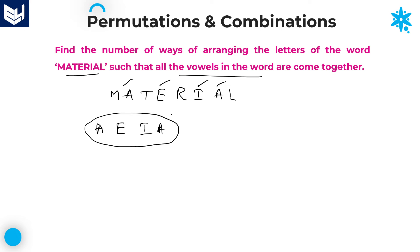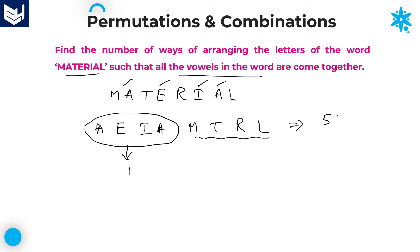Since all vowels must come together, we take all four vowels as a single entity. The remaining letters are M, T, R, L. Now we arrange these four remaining letters plus one single entity — five items total — which can be arranged in 5! ways.